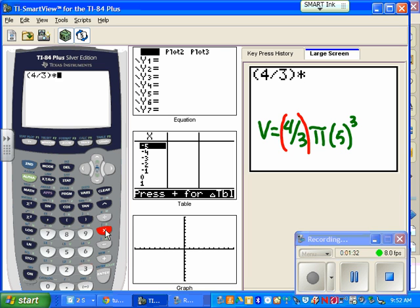I'm going to hit multiply there. I'm going to use second and the housetop to get the pi, then times again, times 5 cubed. And in order to do 5 cubed, I'm going to put the 5 in parentheses.